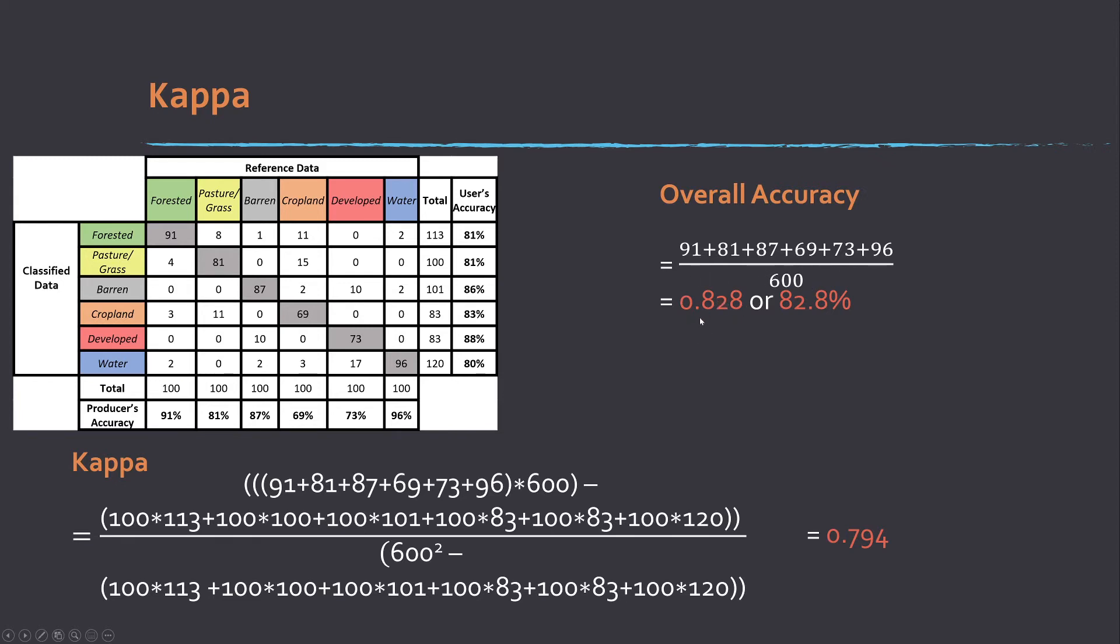We get a proportion of 0.828 or a percentage of 82.8%. Overall accuracy is sometimes reported as a proportion, sometimes as a percentage, but generally you see kappa represented as a proportion. How kappa is calculated is you take the number of correct and multiply it by the number of samples, and then you subtract from that a factor. And then you subtract that same factor from the denominator, but instead of doing correct times total, you do total times total or total squared.